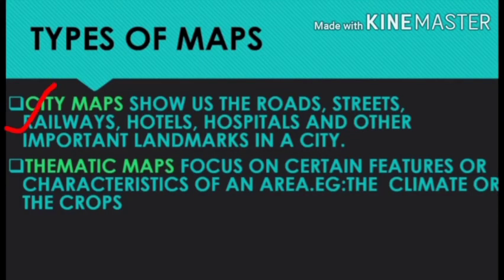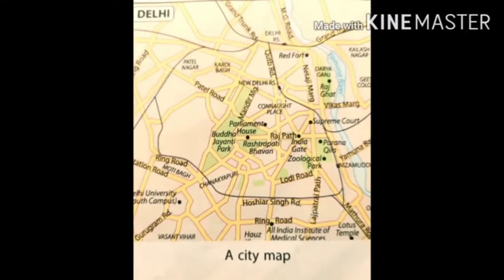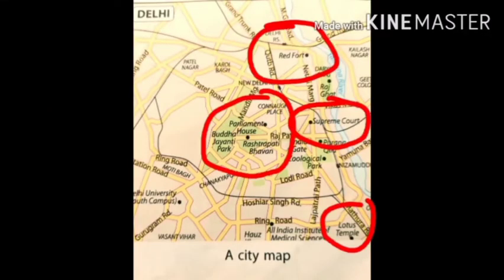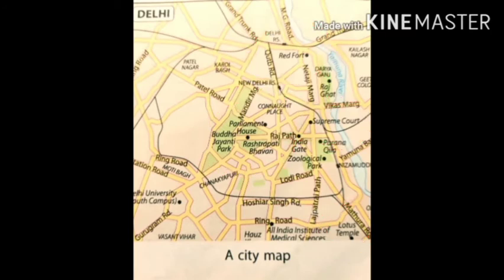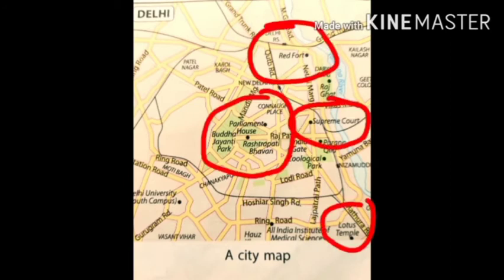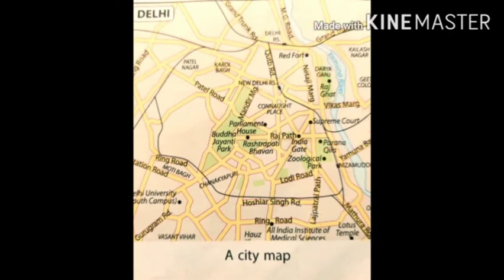The next important type of map is a city map. It shows the roads, streets, railways, hotels, hospitals, and other important landmarks in a city. This is a city map of Delhi, where we can see many landmarks like Red Fort, Parliament House, Supreme Court, and Lotus Temple. The city map shows the details of landmarks in a city.